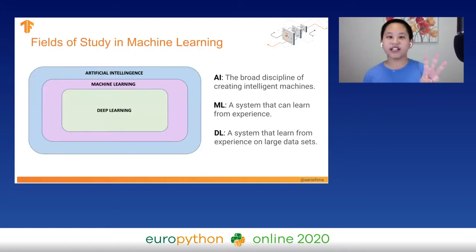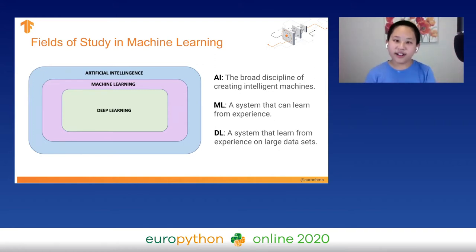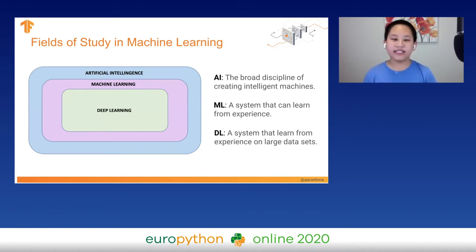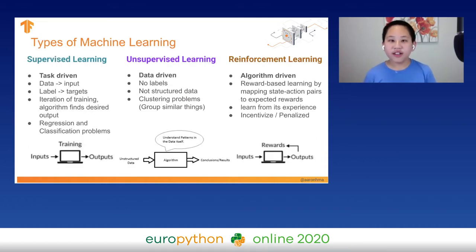There are three fields of study in machine learning. The first is artificial intelligence or AI — the broad discipline of creating intelligent machines to think for themselves. Machine learning or ML is a subset of AI and is a system that can learn from its own experience without any human intervention. Deep learning or DL is a subset of both AI and machine learning, and it's a system that can learn from experience on humongous datasets. When we talk about machine learning, we're actually referring to three different things.